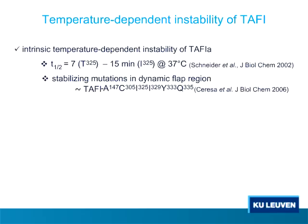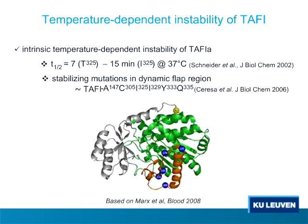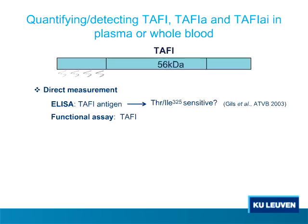This TAFI variant was also crystallized by the group of Joost Meyers here in Amsterdam. In this ribbon diagram representing the crystal structure of TAFI, you can see the activation peptide in gray and the TAFI-A moiety in green and orange. The sphere indicated at position 92 is the cleavage site. All the mutations that stabilize the active conformation are located in this alpha helix, which is called the dynamic flap region.